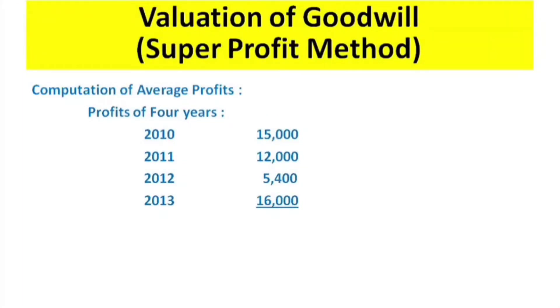We list the profits for each year: 2010, 2011, 2012, and 2013 — that is 4 years in total. We find the total of all four years' profits and then divide by 4 to get the average profit.